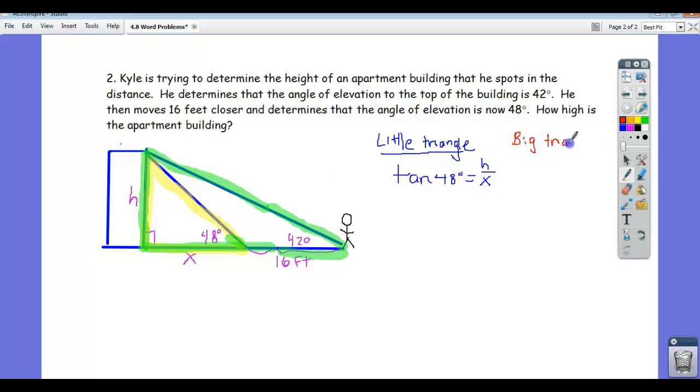If you look at the big triangle, then I'm looking at the green one, then is there a trig relation that relates the 42 degrees with the h, and maybe this whole side? Well, I think it's also tangent. Opposite over adjacent. So I'm going to write tangent of 42 degrees equals, opposite is h, and adjacent is this whole distance. Well, this is a distance x and that's 16, so this whole distance is x plus 16. So h over x plus 16.